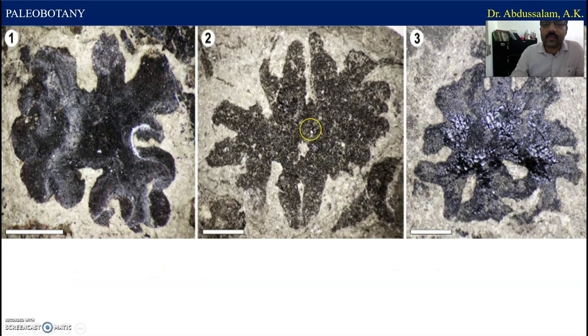These are some of the most important species. This looks like Aurexia and Marchantia — examples of fossil bryophytes.